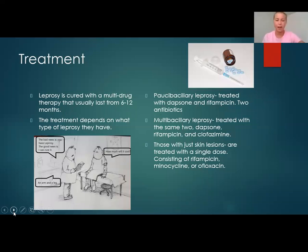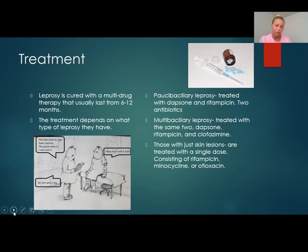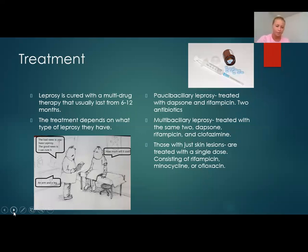The treatment depends on the type of leprosy that someone has. They are each treated with a multi-drug therapy that usually lasts between six to twelve months, or a single drug therapy, which is usually for a specific kind of leprosy. Paucibacillary leprosy is treated with a multi-drug therapy using two antibiotics: dapsone and rifampicin. Multibacillary leprosy is treated with the same two antibiotics as well as one more additional antibiotic called clofazimine. When you just have skin lesions, that is a lesser version of leprosy and is treated with a single dose of rifampicin, minocycline, or ofloxacin.